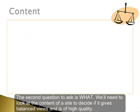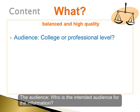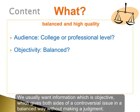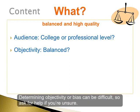The second question we need to ask is: what? We'll need to look at the content of a site to decide if it gives balanced views and is of high quality. We'll consider things like the audience — who is the intended audience for the information? Is it for the general public, students, or professionals studying or working in a particular field? Objectivity: we usually want information which is objective, giving both sides of a controversial issue in a balanced way without making a judgment. Scan the information, including any About Us links, to see if you detect obvious bias. Determining objectivity or bias can be difficult, so ask for help if you're unsure.